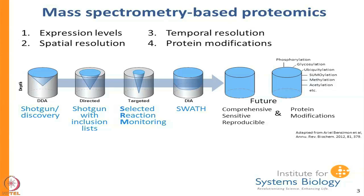This is a depiction of SWATH MS where each cylinder represents a proteome. The top of the cylinder represents more concentrated proteins, say in the micromolar range, and down at the bottom are very dilute proteins, say in the femtomolar or attomolar range. These are the different techniques for mass spec proteomics, and I would like to go through them briefly and give an illustration of some of the pros and cons.